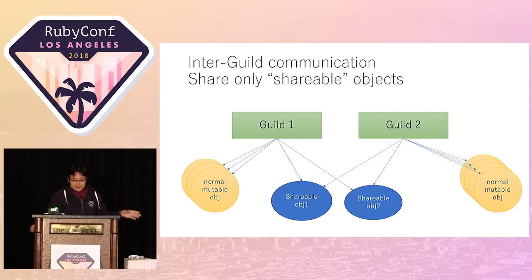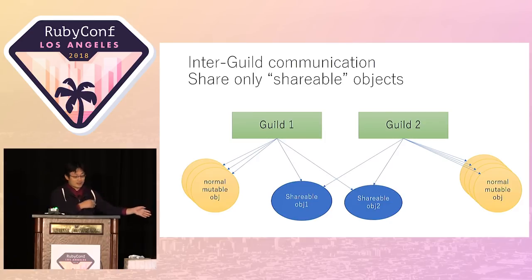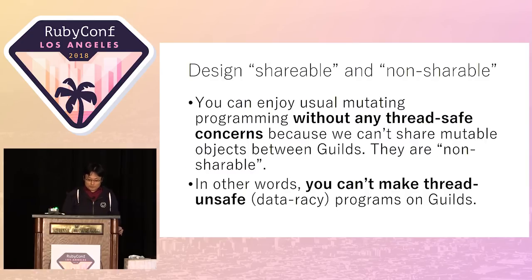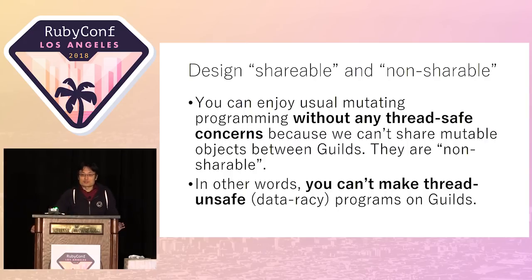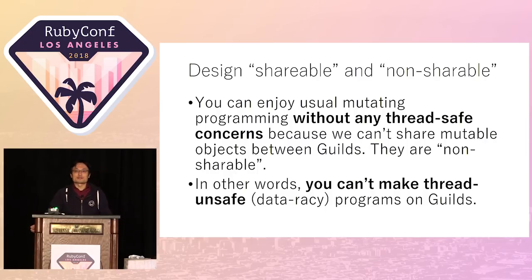However, there are several objects we can share between Guilds — we call these shareable objects. We define shareable and non-shareable objects. By separating these two kinds of objects, we can enjoy ordinary programming using mutable state without thread-safety concerns within one Guild, because we can't share mutable objects between Guilds. In other words, you can't write thread-unsafe or data-racy programs with Guilds.